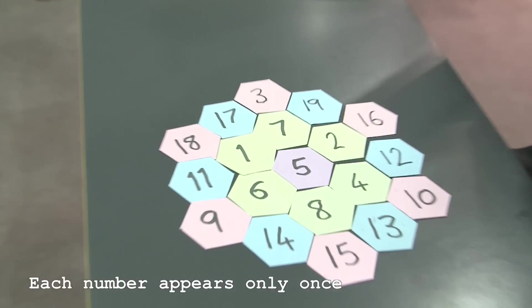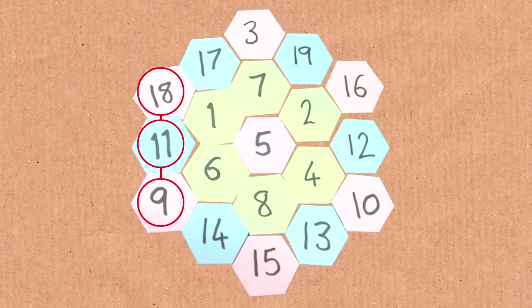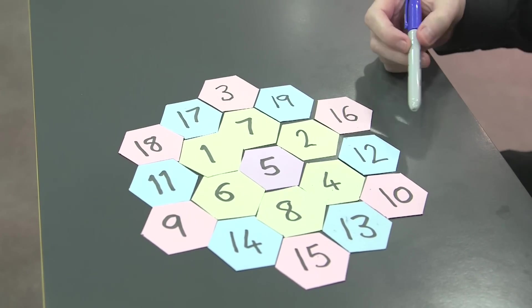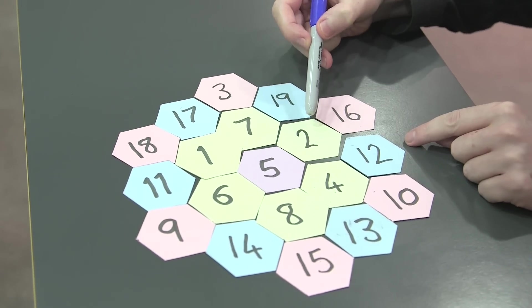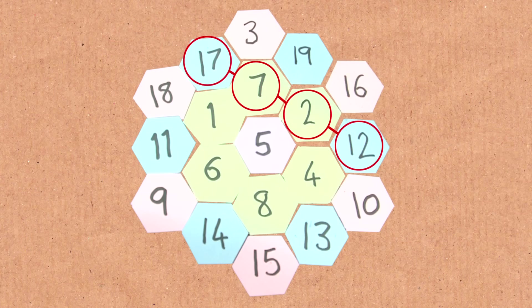So let's do that. If I say 9 plus 11 is 20 plus 18 is 38. Or if I add up a longer one, let's do a row of 4. Like this one here, I could have 12 plus 2 is 14, plus 7 is 21, plus 17 is 38.